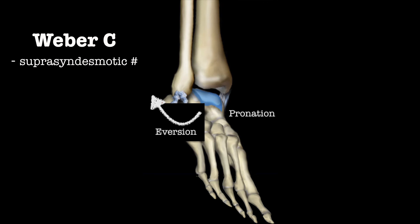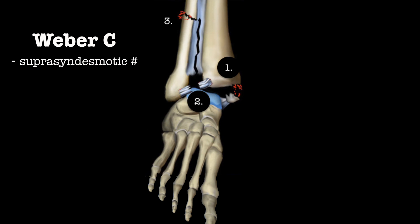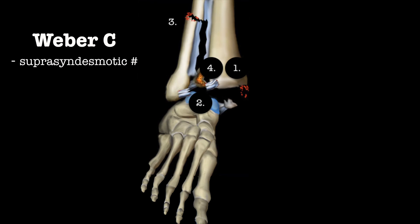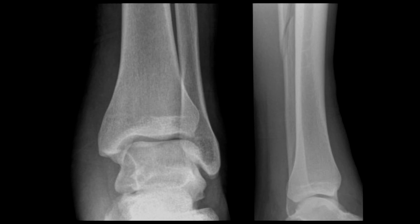Finally, let's look at Weber C fractures. There is pronation and eversion of the foot, which causes ligamentous rupture or avulsion fracture of the medial malleolus. The anterior syndesmosis ruptures, there is a fibular fracture above the syndesmosis, and finally there is an avulsion fracture of the malleolus tertius or a rupture of the posterior syndesmosis. Looking at this X-ray, notice that the syndesmosis is disrupted. There is an avulsion fracture of the medial malleolus and a fibular fracture above the syndesmosis — look at the second X-ray, as the fracture is higher up. On the AP view alone you could have misdiagnosed this as soft tissue swelling.